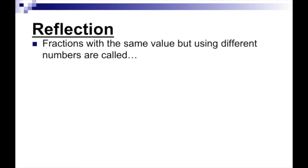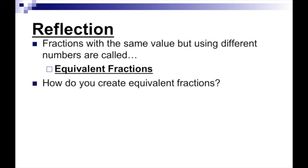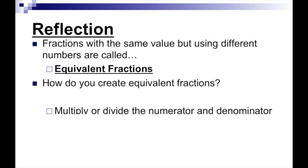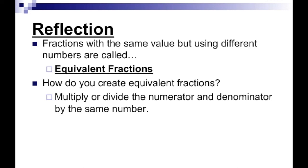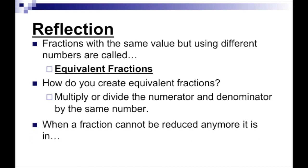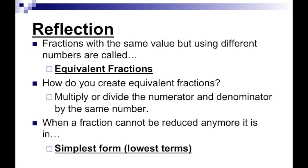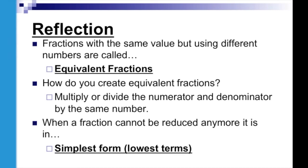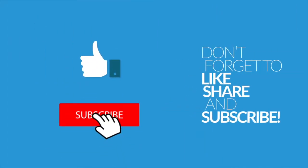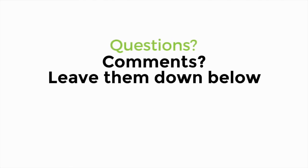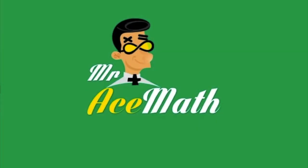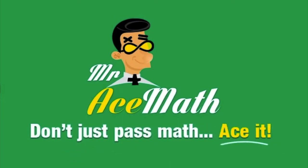Let's review. Fractions with the same value but using different numbers are called equivalent fractions. To create equivalent fractions, you multiply or divide the numerator and the denominator by the same number. When a fraction cannot be reduced anymore, it is in simplest form, or lowest terms. Don't forget to like, share, and subscribe. Questions or comments? Leave them down below. Thanks for using Mr. Ace Math — don't just pass math, ace it.